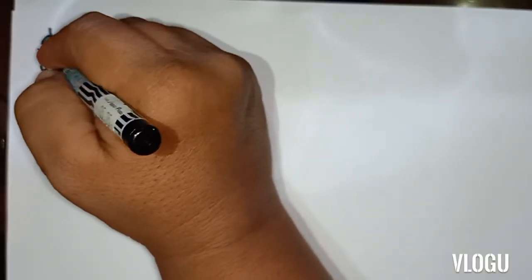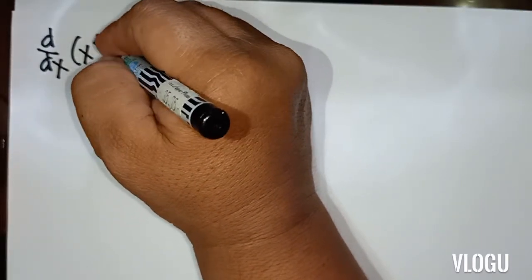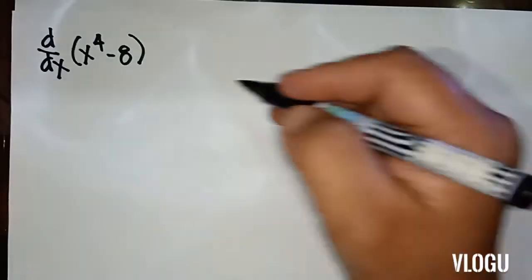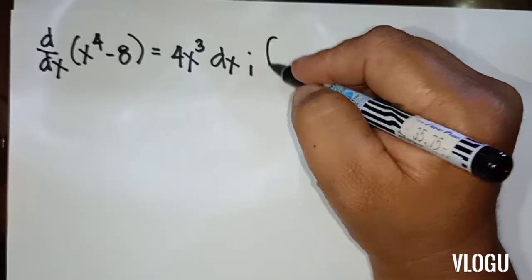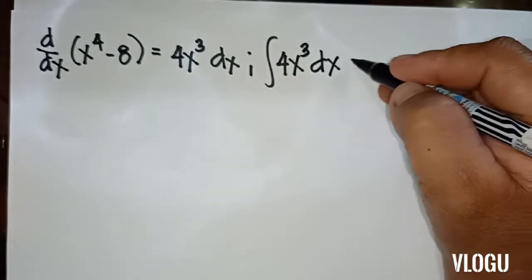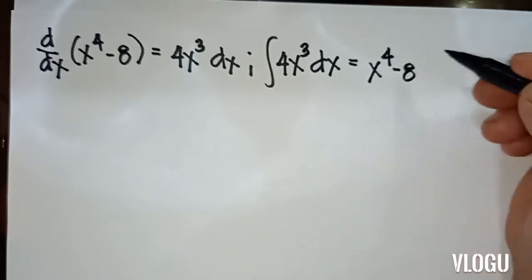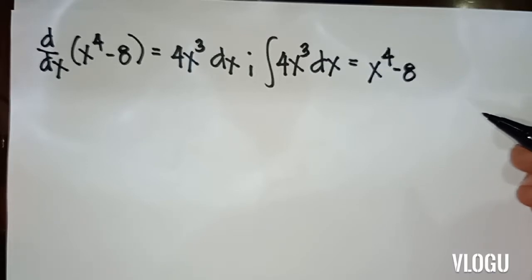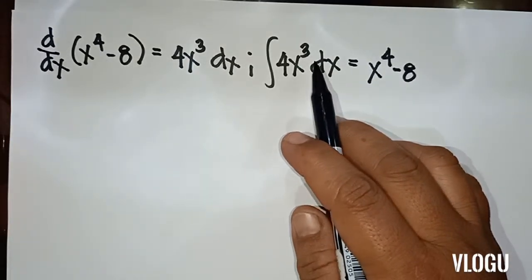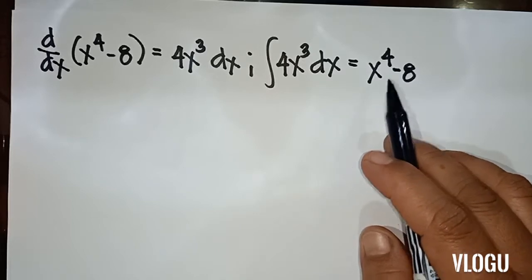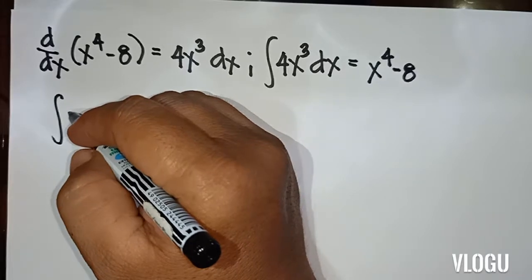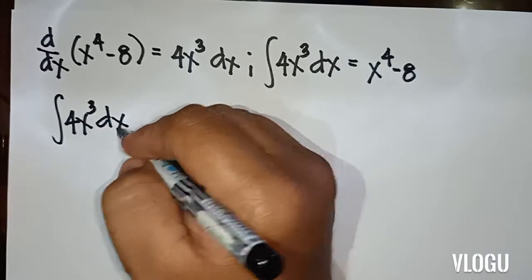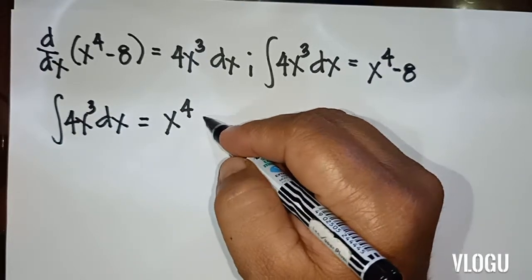Next example: d/dx of x to the fourth plus 5, and x to the fourth minus 8 — that is still equal to 4x³ dx. The integral of 4x³ dx is equivalent to x to the fourth minus 8. So as you can see, the integral of 4x³ can be expressed as x to the fourth plus C.